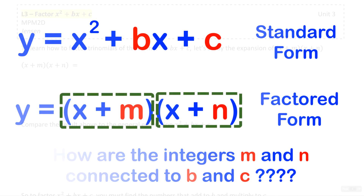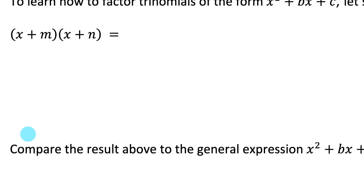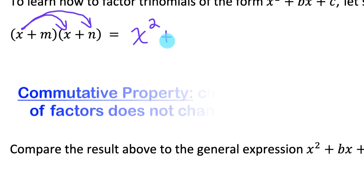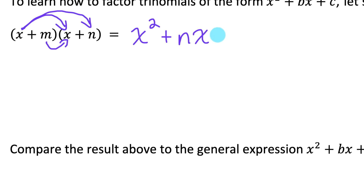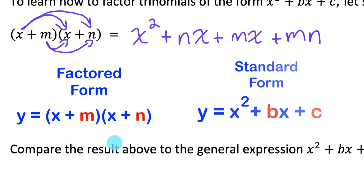Let's expand x plus m times x plus n. When we have a binomial times a binomial, each term in the first binomial must be multiplied by each term in the second binomial, giving us four products: x times x is x squared, x times n is nx, m times x is mx, and m times n is mn.